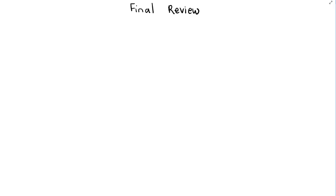This first problem I'd like to go over is problem 13. In this problem, Justin is trying to decide between two plumber companies to fix his sink. The first company charges $50 for a service call — a $50 fee just to get service — and then an additional $36 per hour of labor. The second company's initial fee is $35.